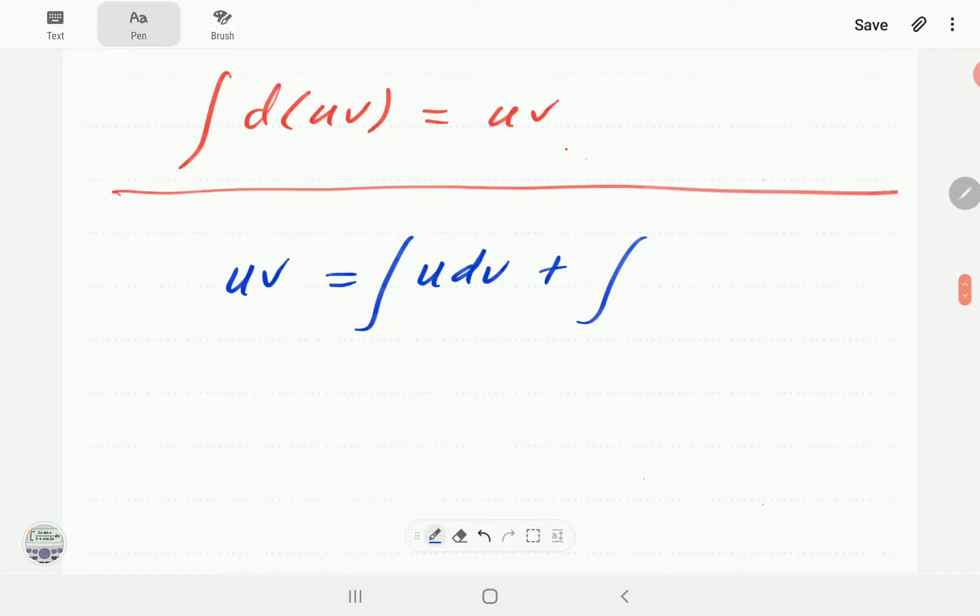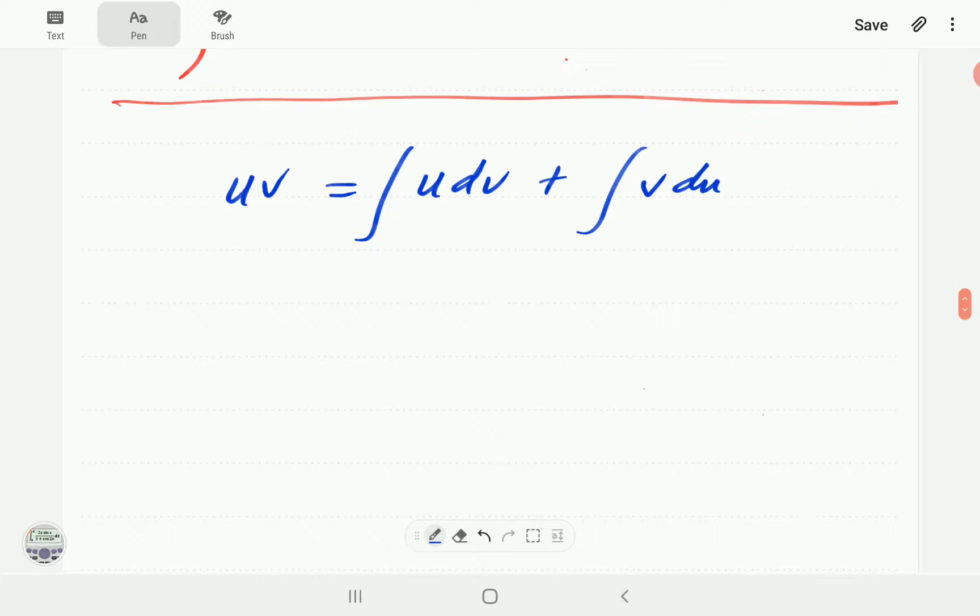On the right hand side we've got the integral of u dv plus integral of v du. These ones we can't simplify because it's not just dv. If it was dv then integral of that would be v of course.